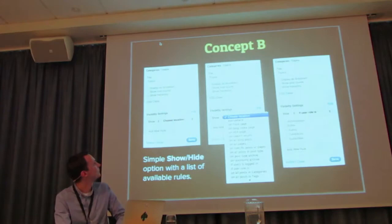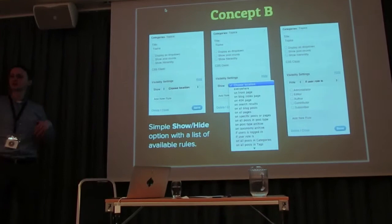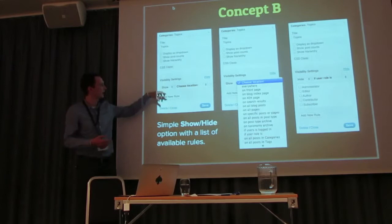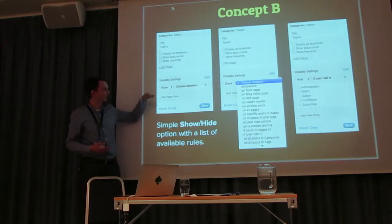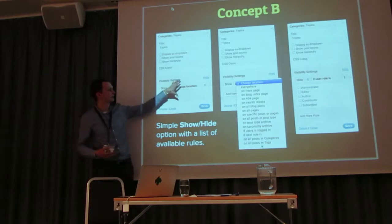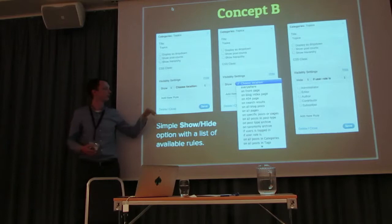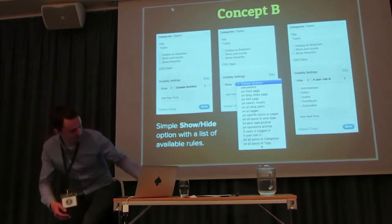Then I thought: that's not enough. Let's take the original idea of having the visibility setting in the widget admin screen, and for each widget we add this visibility setting. Instead of having checkboxes and things like that, we hide everything and give you this interface where you can add as many rules as you want for when the widget is visible, shown, or hidden. It's kind of nice — it works really well. I'm going to show a demo of this one.